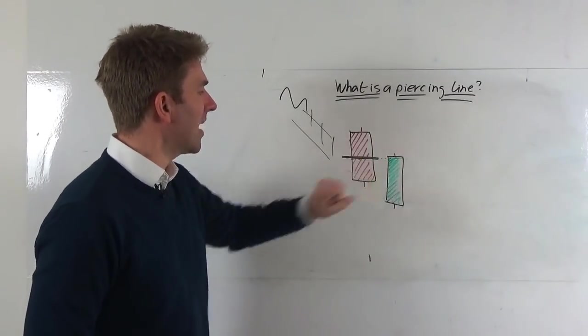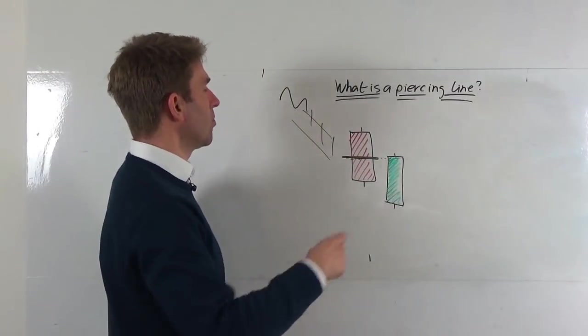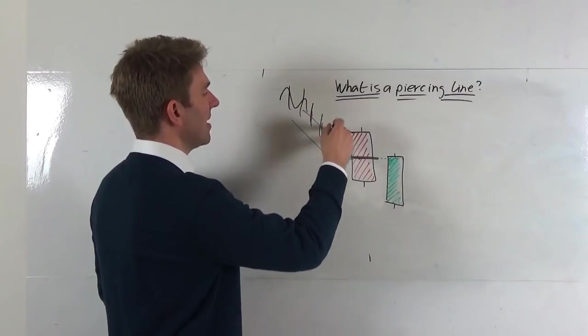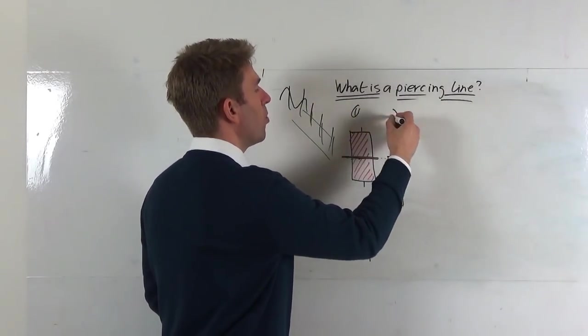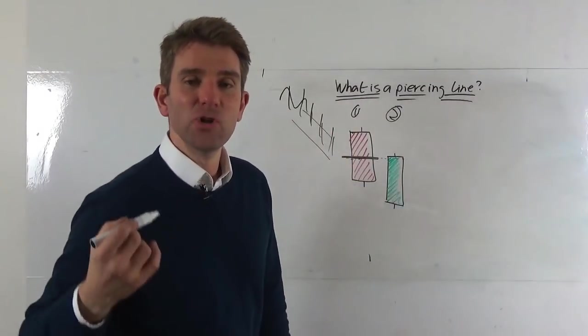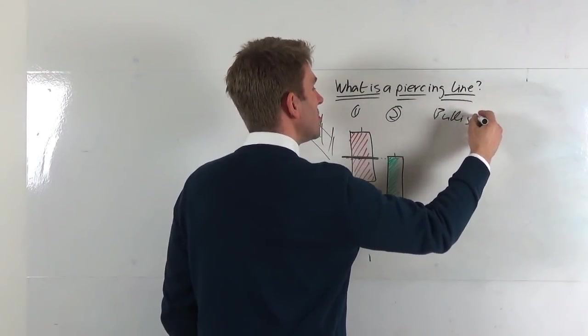Right, we have two candlesticks here which are the ones we're looking at. However, the important thing is to look prior to that. We're in a downtrend, so we're down, down, down, down, down. This is the two candles that we're looking at: candle number one, day one, and day two, daily chart. This is specifically something that is bullish, so something we're looking to go long on.